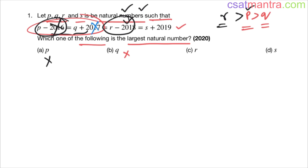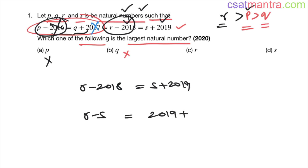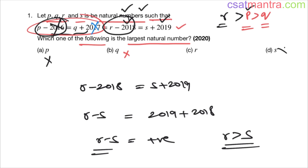Now let's see who is greater between r and s. r minus 2018 equals s plus 2019, so r minus s equals 2019 plus 2018 — essentially positive. That means r is greater than s, so s cannot be the largest. Therefore r is the largest among all these numbers, and C is our answer.